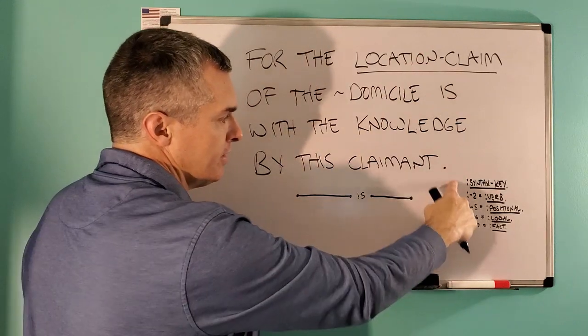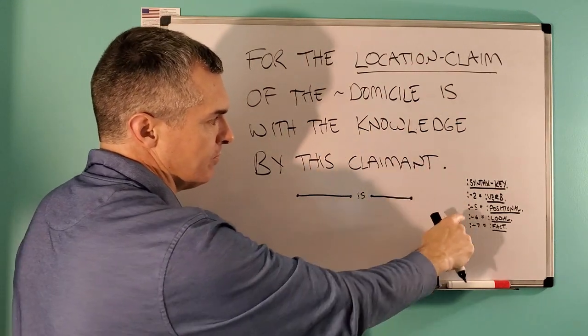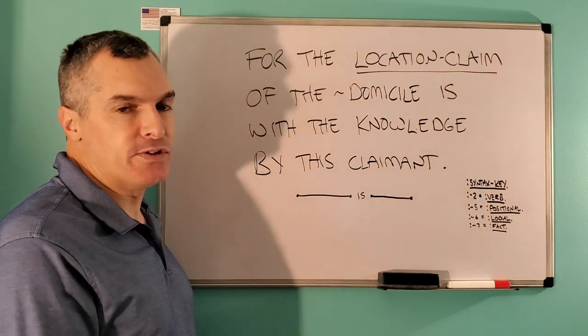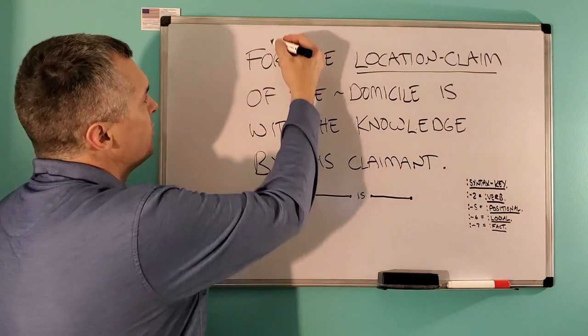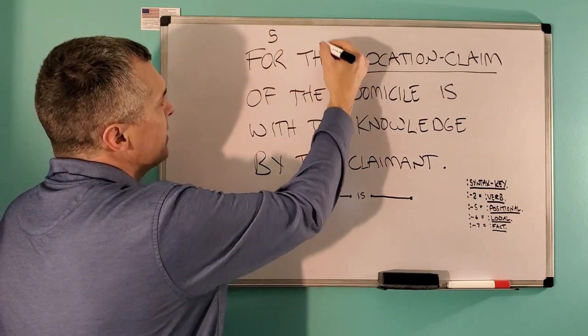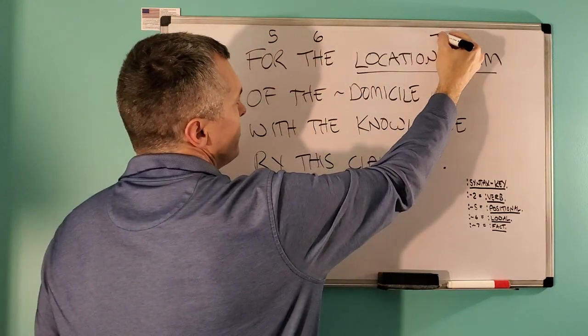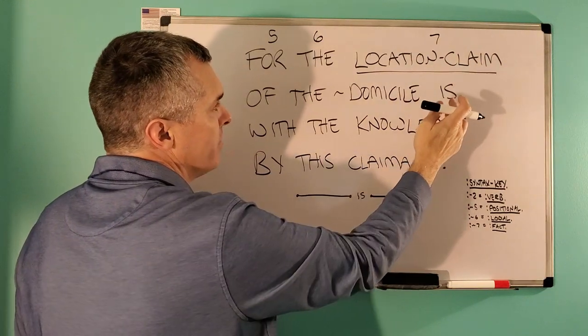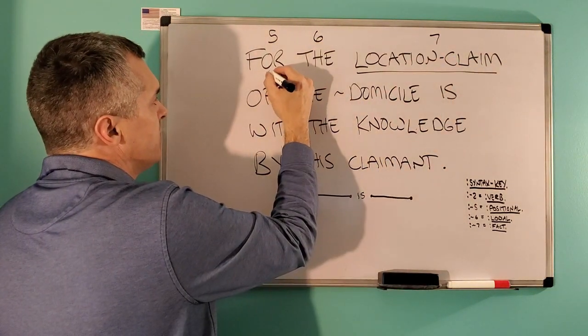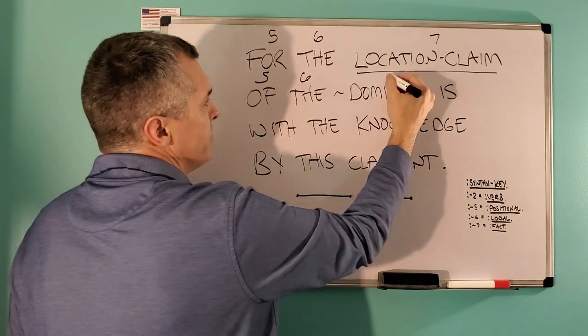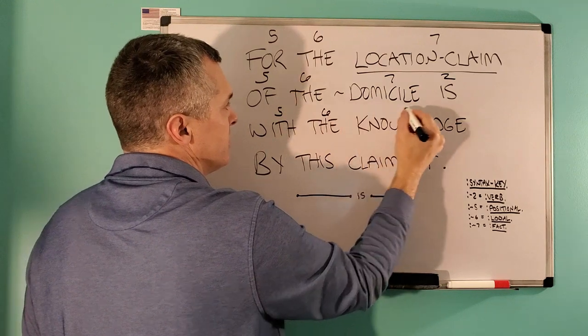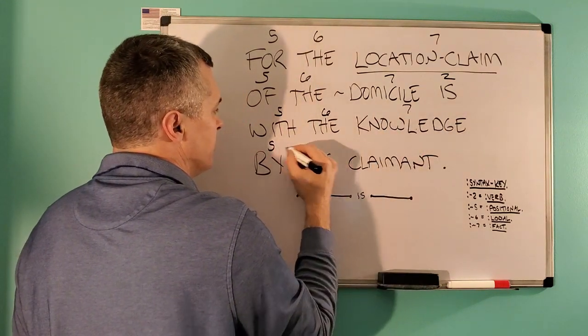Here's a syntax key for this group of wordings: we have 2 for verb, 5 for positional, 6 for lodial, 7 for fact. The way it would be syntaxed, with the correctness, would be positional, lodial, fact (this is a compound known, a compound fact hyphenated and underlined), positional, lodial, fact, verb, positional, lodial, fact, positional, lodial, fact.